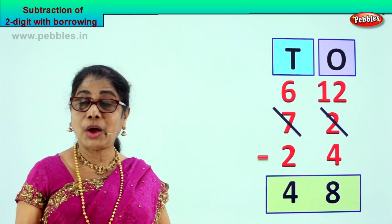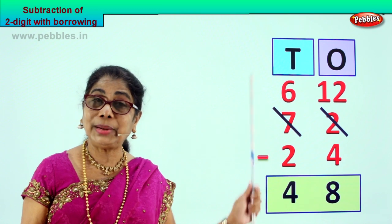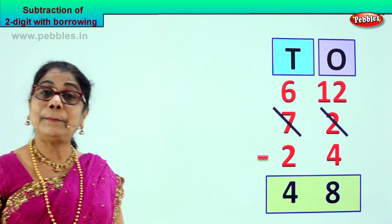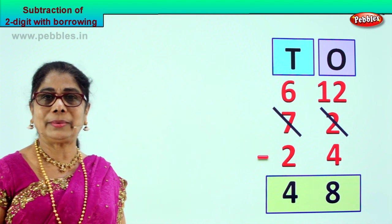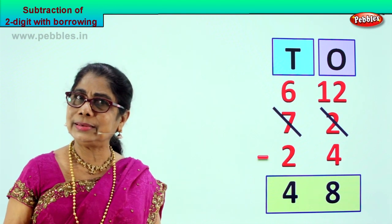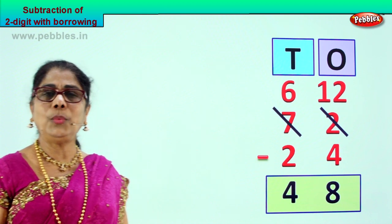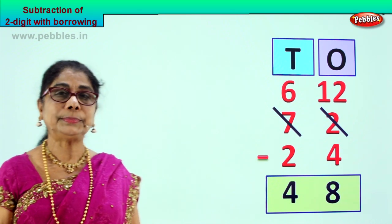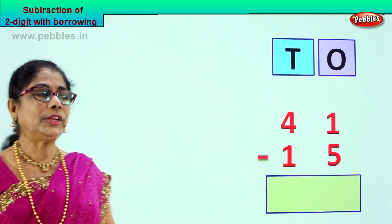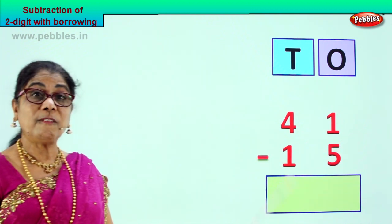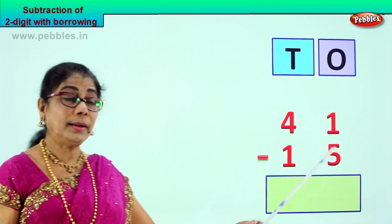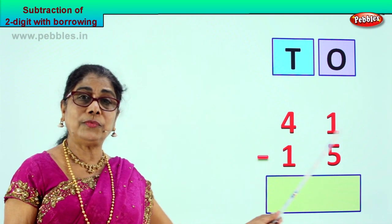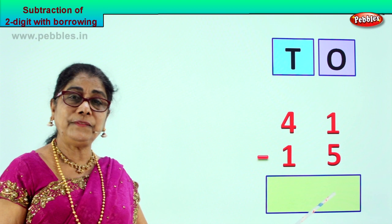Now you learnt how to borrow from the tens, bring it to the ones place, and take away the big number from the small number. Shall we go to another exercise? See how we do the borrowing. Look at your sum: 41 minus 15.